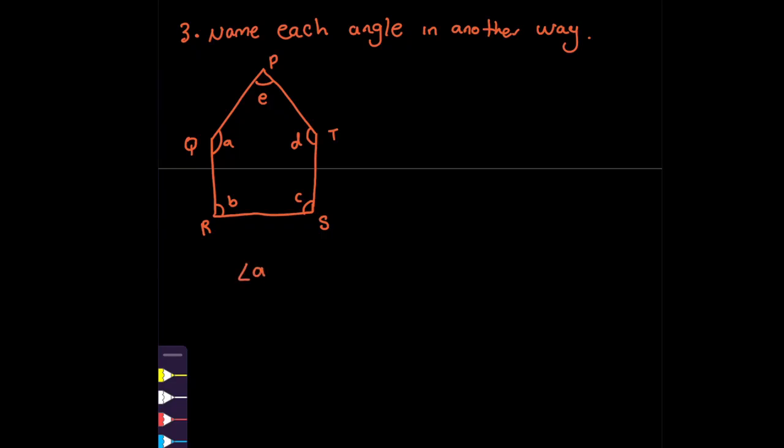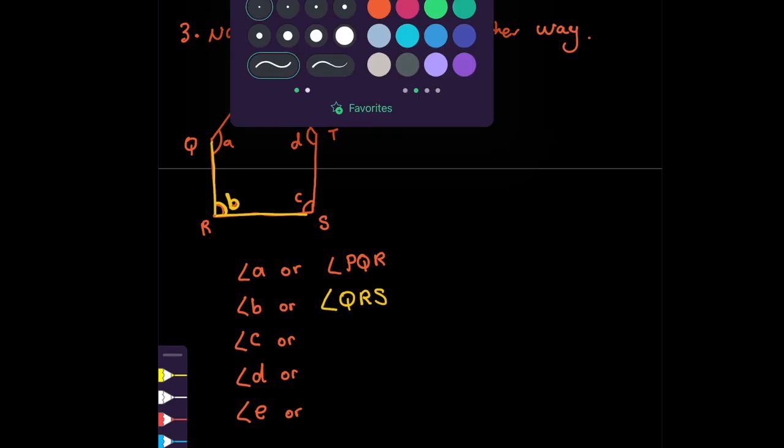We have angle A. What else do we see? Angle B. Angle C. Do we have C? Yes, we have C, D, and E. It's asking another way of calling these angles. So for example, angle A, we call it PQR. Angle B, I'm just going to show you with a different color. So this is angle B, correct? So how can we call it? We can call it QRS. Correct? What about angle C? This is C. I'm showing you with the color pink. We can say RST.